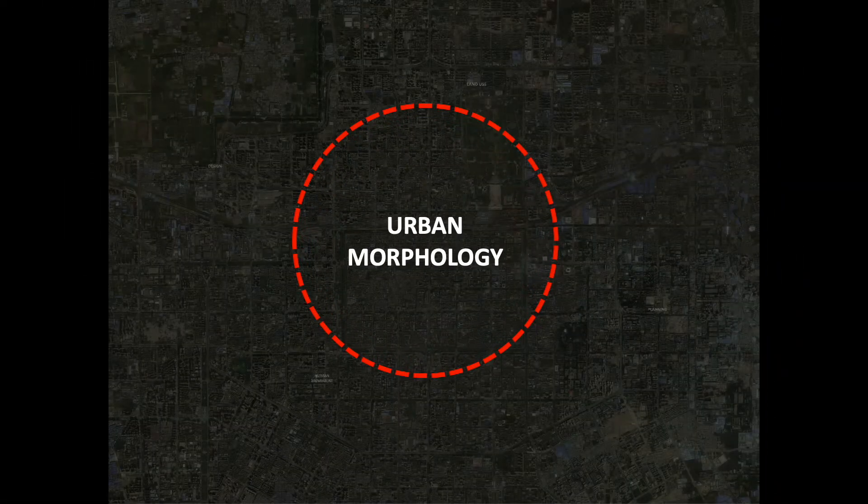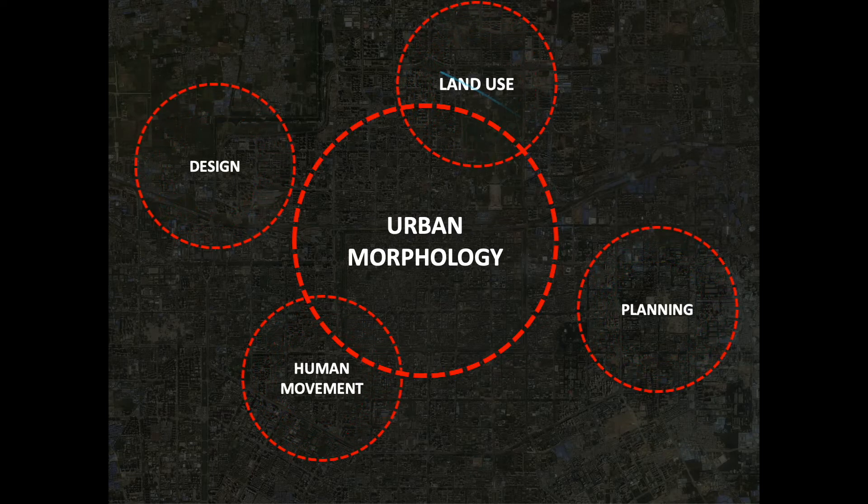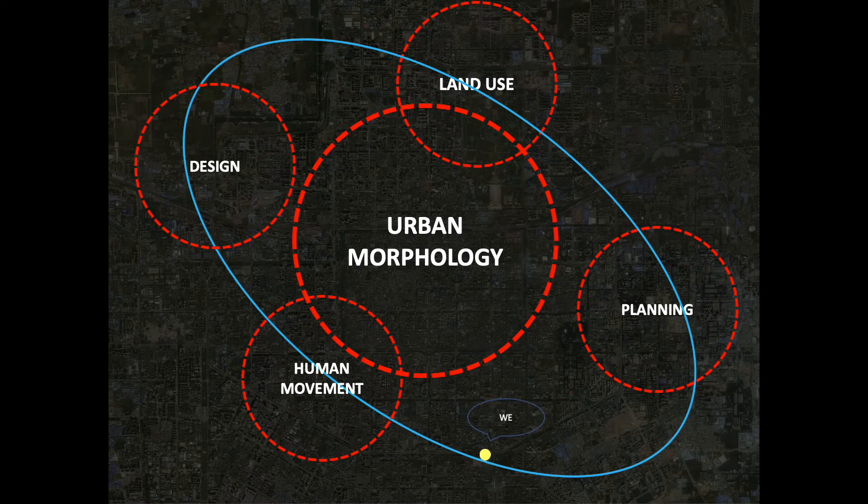Hello everyone, my name is Joe Chen. I will briefly talk about research projects that I have been working with graduate students here at School of Planning. The third research project is about how we understand cities through urban morphology. We are particularly interested in how land use and human movement is impacted by physical urban form.